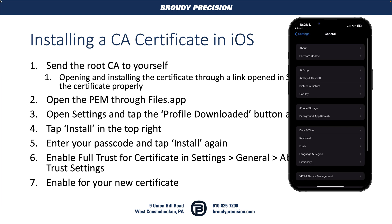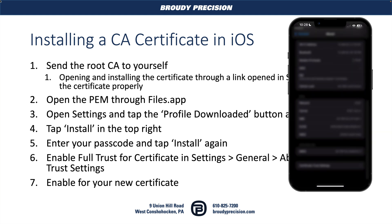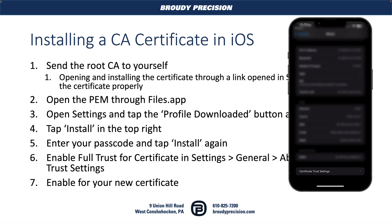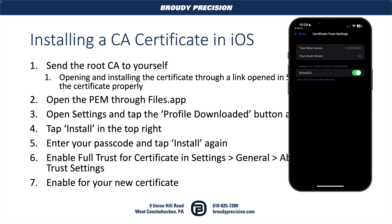So we'll go back and go to the About button, scroll down to the very bottom, and there's a Certificate Trust Settings option that's a bit hidden. We're going to enable that. It's going to say that enabling the certificate allows third parties to look at private data sent through the connection — but we trust the certificate and the server we're connecting to, so we'll hit Continue. And that's it — we're all set on the iPhone.